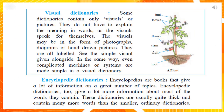Visual Dictionaries: Some dictionaries contain only visuals — pictures and images. They do not have to explain the meaning in words, as the visuals speak for themselves. The visuals may be in the form of photographs, diagrams, or hand-drawn pictures. They are all labeled.